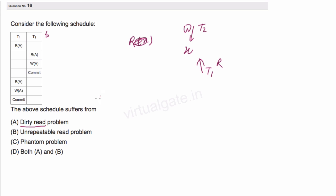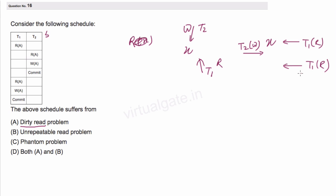Now we have the unrepeatable read problem. It means when you repeat a read, you get a different value. For example, transaction T1 reads a value x, then meanwhile another transaction T2 performs a write on x, and when transaction T1 tries to read the same x again, it gets a different value. So T1 gets two different values of x across its two reads. That is the problem of non-repeatable or unrepeatable read.